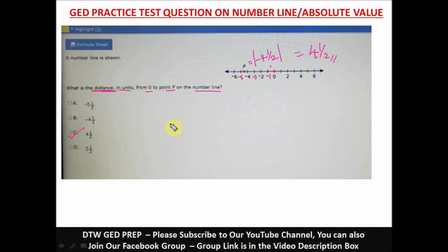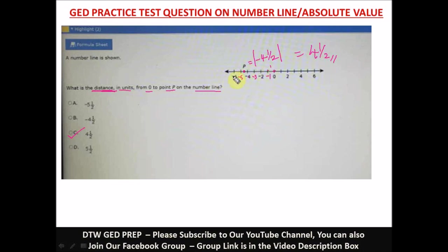But it doesn't end there — we are asked for the distance, which can't be negative. It has to be the absolute value of negative four and a half, which gives us positive four and a half. Our correct option in this question is option C. Take note: if you see the word 'distance,' your answer should be positive and expressed in absolute value brackets. If it just asks for the value, whatever point it is on the number line — negative or positive — that is your answer.